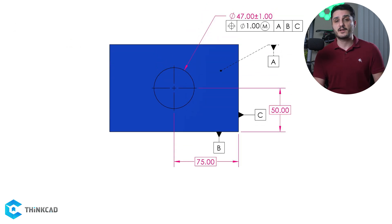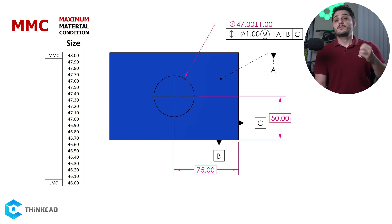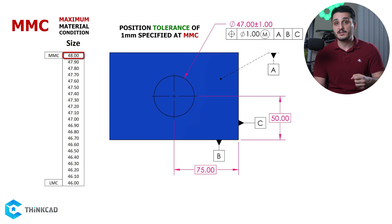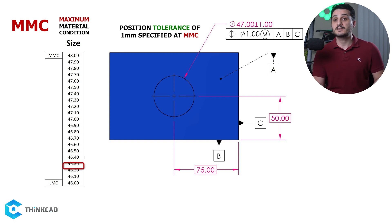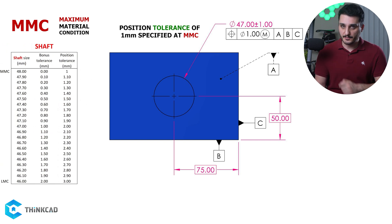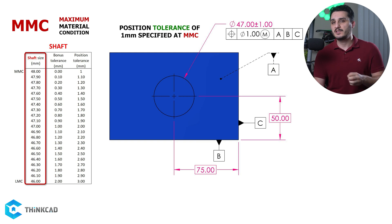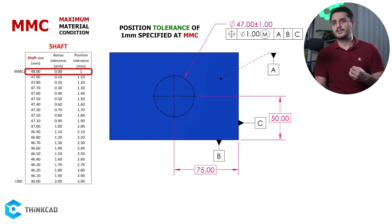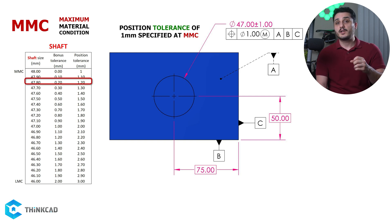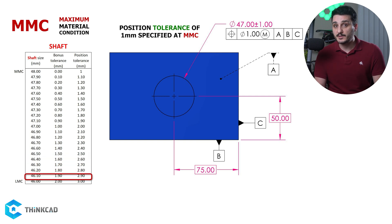Now let's see what happens when we use the MMC modifier in our feature control frame. This means our 1 mm position tolerance applies when the size is at MMC, which is 48 mm. As we depart from MMC and move towards LMC, we gain bonus tolerance the exact amount of departure. Look at this table: I have shaft size in 0.1 mm increments ranging from MMC to LMC. There is no bonus tolerance at MMC, so our precision tolerance is 1 mm. As our size gets smaller, we gain the same amount of bonus tolerance. When we get to LMC of 46 mm, we have 2 mm of bonus tolerance, giving us a total of 3 mm of position tolerance.